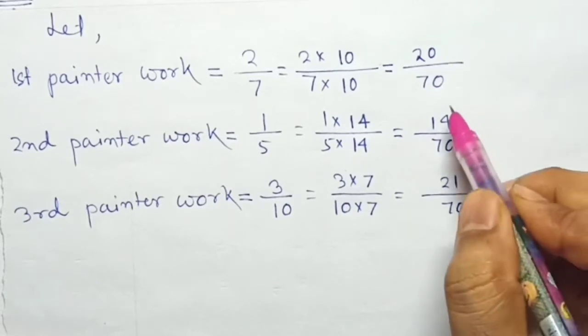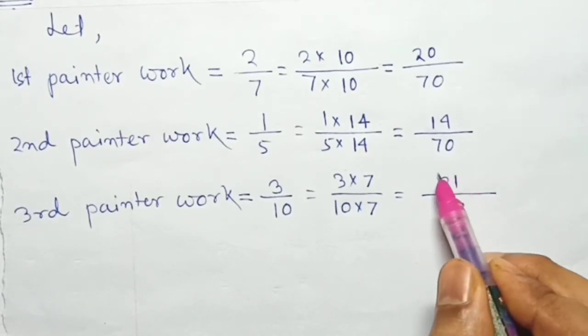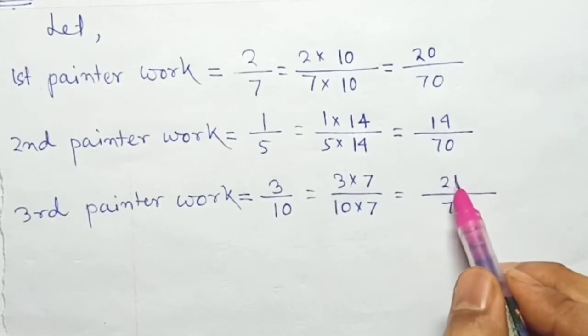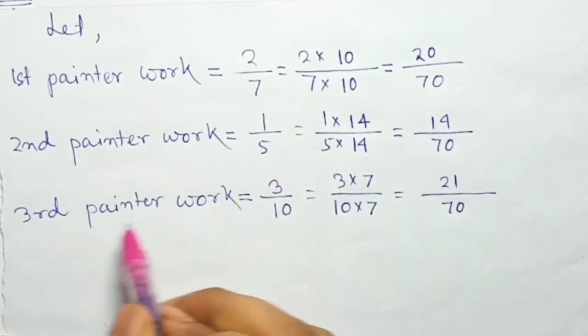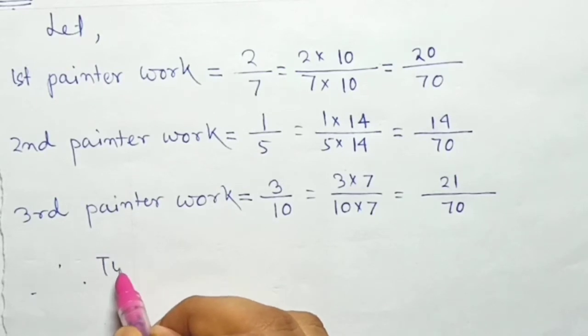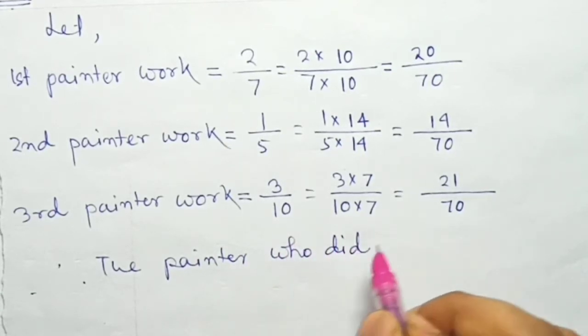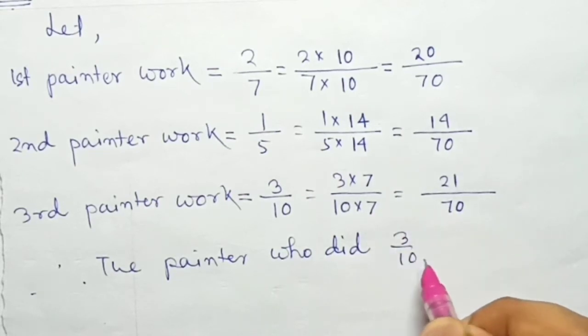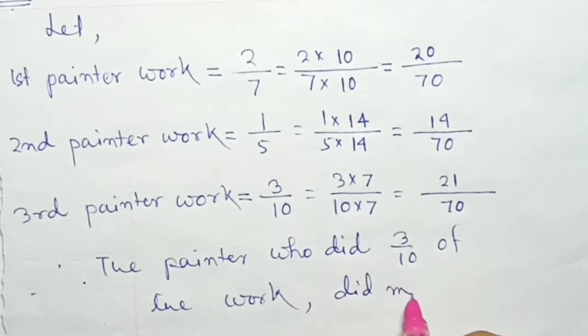Now the denominators are the same. When denominators are equal, the fraction with the greatest numerator is the greatest. So the third painter did the most work. The painter who did 3/10 of the work did maximum work.